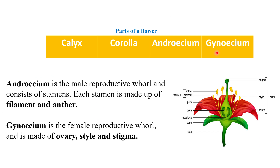First we will see the parts of a flower. This green part is known as the calyx or sepal, and this colored part is known as the corolla or petal. These two parts only help in the process of sexual reproduction but do not directly take part in the process.